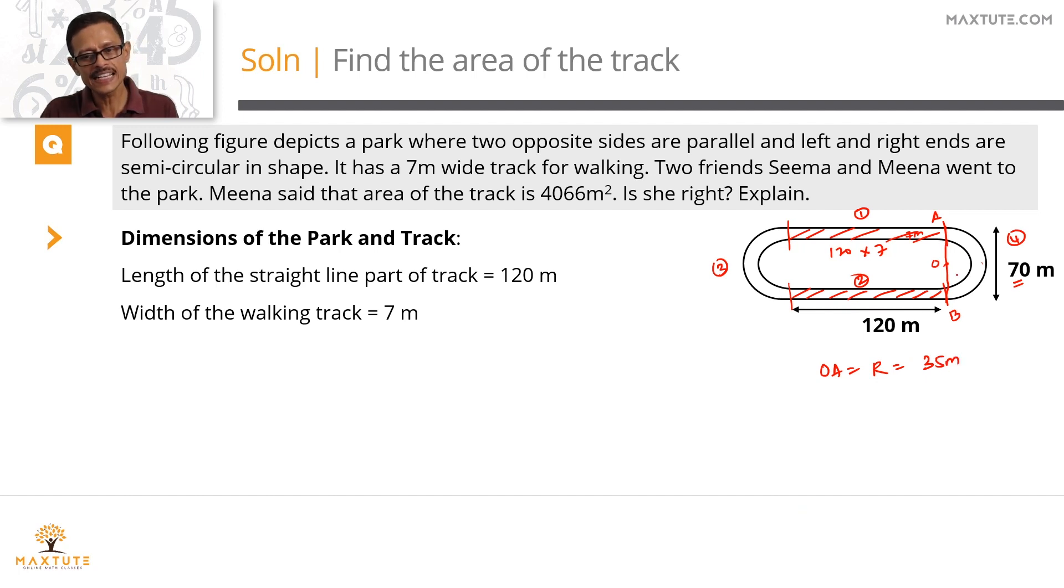Now can we find out the inner radius of this walking track? This width is equal to 7m, the walking track width. Outer radius is 35. This track width is equal to 7m. So I will mark this point as C. AC is 7m. OA is equal to 35m. So OC which is equal to the inner radius of this track is going to be 35 minus 7 which is equal to 28m.